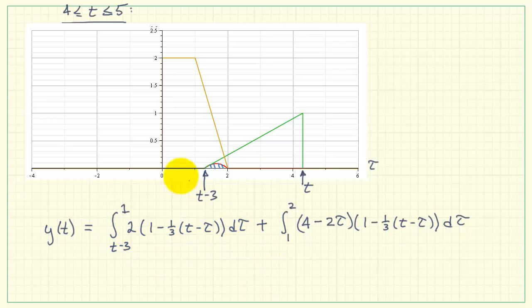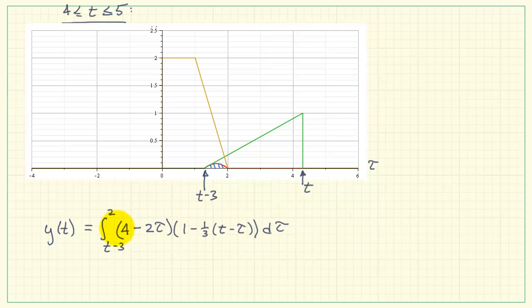All right, getting closer to the end. This is the last region where we have partial overlap. We have only one integral to write, and this would run from t minus three to two. And again, using the computer algebra tool, we end up with this result for y of t.